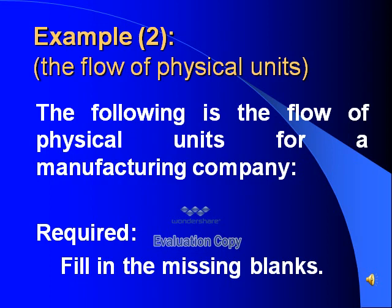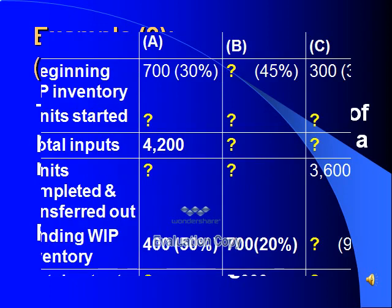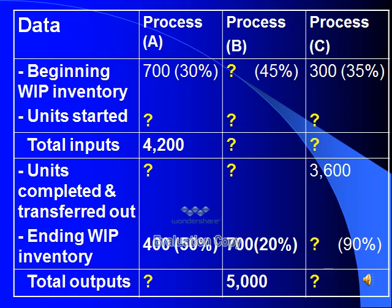I will solve example number two. The following is the flow of physical units for a manufacturing company. Required: fill in the missing blanks. The company has three processes: A, B, and C. Beginning inventory in process A is 700 units with a completion degree of 30%. In process B, the completion degree is 45%. In process C, there are 300 units beginning inventory with a completion degree of 35%.